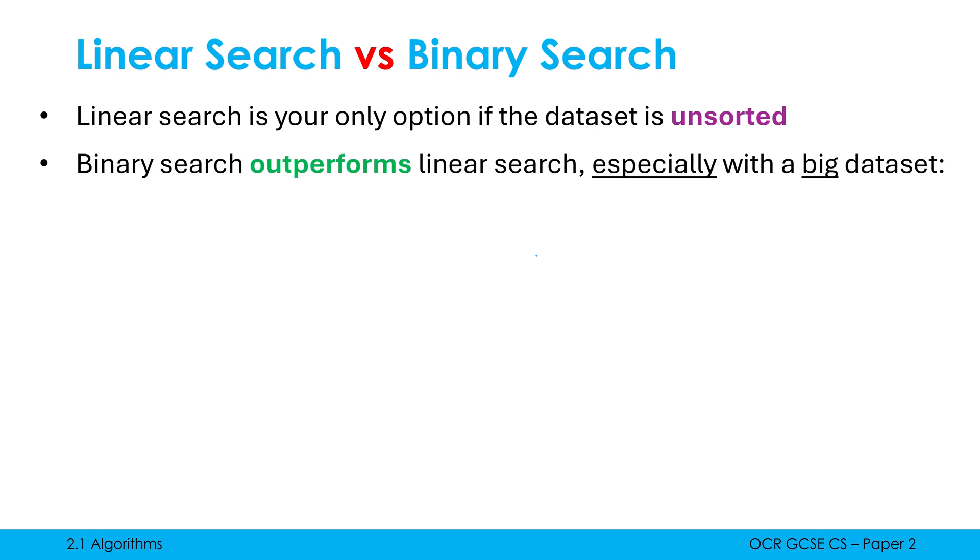However, we want it to be sorted because binary search outperforms linear search, especially with a big data set. Binary search is significantly faster than linear search. If we were to plot it on a graph where the x-axis is how big our data set is and the y-axis is how long it takes, we can see the lines start off being pretty much at the same level. They quickly diverge.